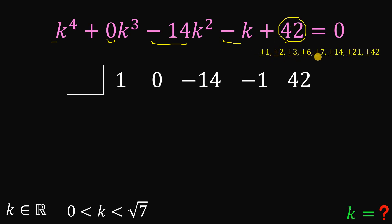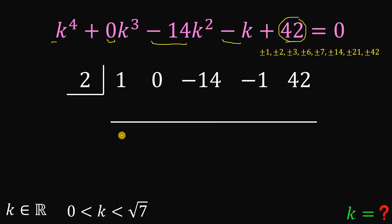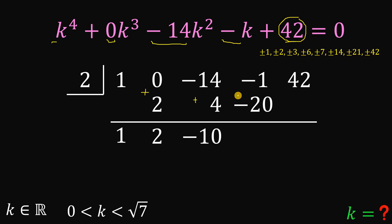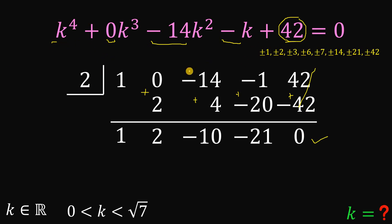The factors of 42 include positive or negative 1, positive or negative 2, positive or negative 3, and more. We choose a value where the remainder equals 0. Let's choose 2. Bring down 1. 1 times 2 is 2. 0 plus 2 is 2. 2 times 2 is 4. Negative 14 plus 4 is negative 10. Negative 10 times 2 is negative 20. Negative 1 plus negative 20 is negative 21. Negative 21 times 2 is negative 42. And 42 plus negative 42 equals 0. The remainder is 0, so 2 is a zero of this quartic polynomial, and k minus 2 is a factor.